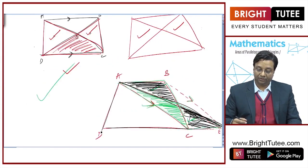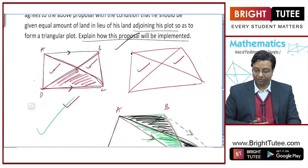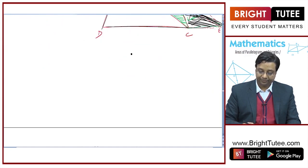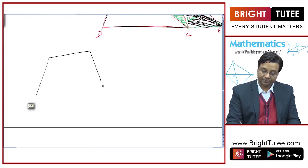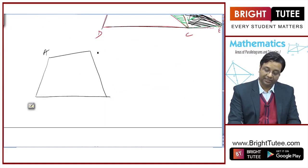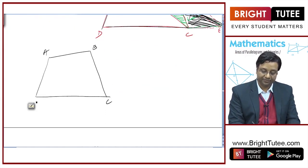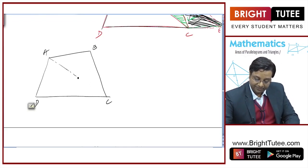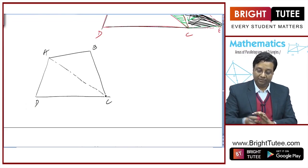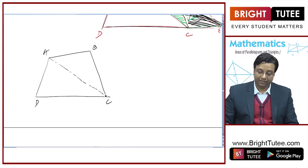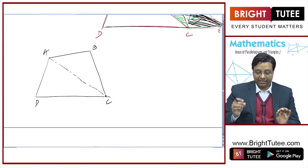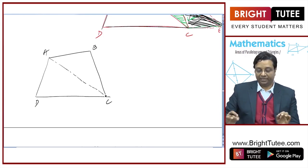So how will you resolve this situation or implement this proposal? We will consider a plot like this. Let us say this is Itavari's plot A, B, C, D. Then you will say: draw a diagonal AC. You can also try this situation by drawing diagonal BD — this will be true in both cases. What I have done is drawn a diagonal in Itavari's plot, diagonal AC.